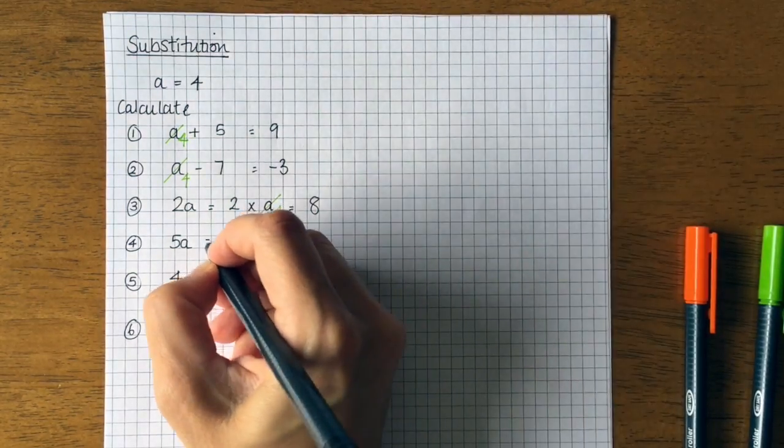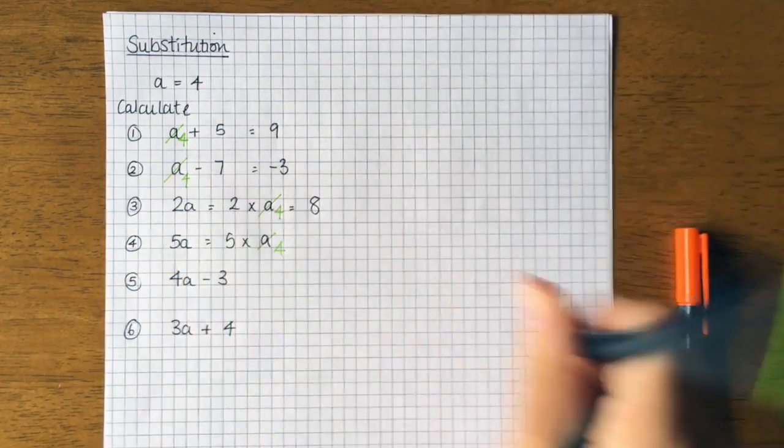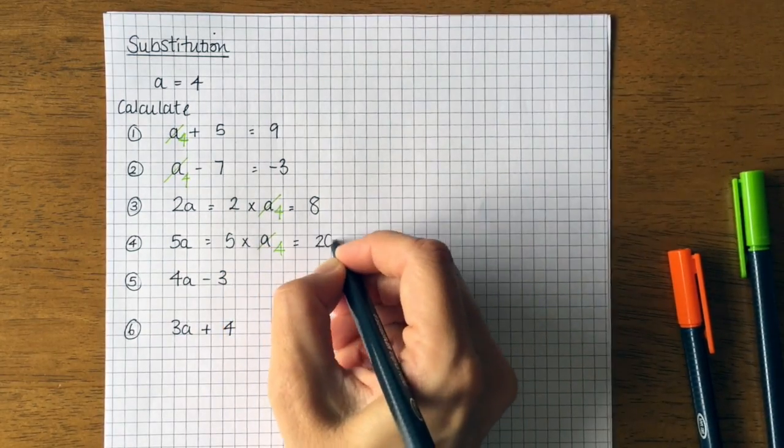So the next one is gonna be five times a. We change a for four. So five times four is twenty.